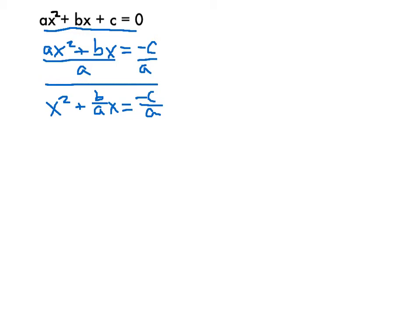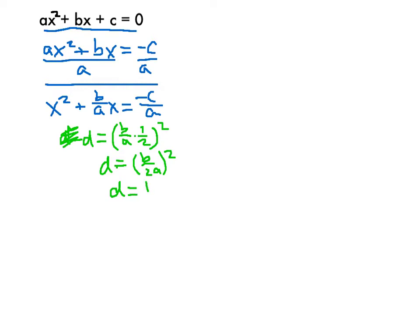Now I have my two pieces — x² + (b/a)x — and those are the two pieces I need to use to complete the square. I need my d value that I'll add to both sides. d is equal to our middle term, which in this case is b/a, divided by 2 — and dividing by 2 is the same as multiplying by one half. Remember, for the d value we need to square it. So the d value we're adding to both sides is (b/2a)², which equals b²/4a².